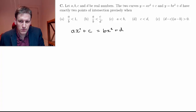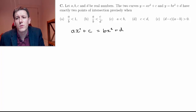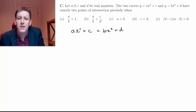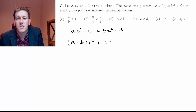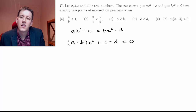Now I've got a quadratic expression here, so let's do what we'd usually do with a quadratic: put everything on one side and gather the terms together. The x squared terms give a minus b times x squared, plus c minus d, equals zero.